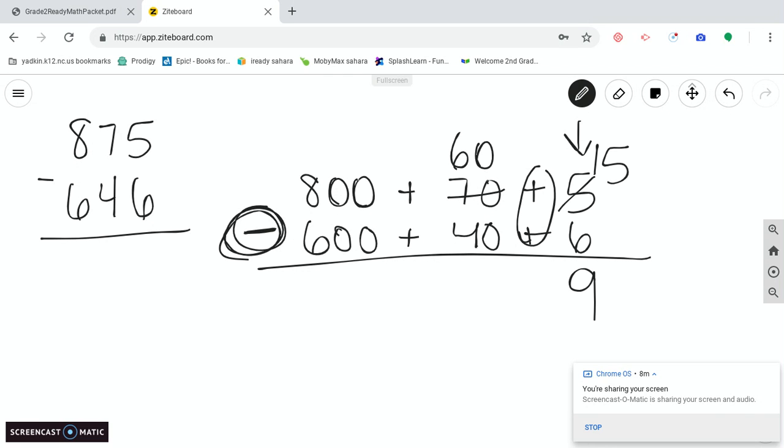I like to think of it as 15 minus 5 minus one more would be 9. Let's look at our tens: 60 minus 40. That's six tens minus four tens leaves us with two tens, and two tens is 20. Eight hundreds minus six hundreds would be 200. My answer is 229.